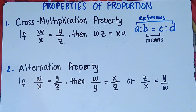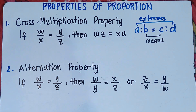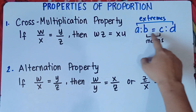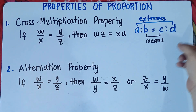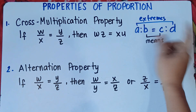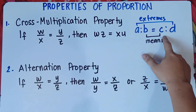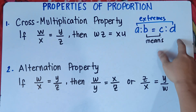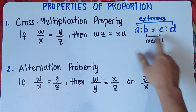In proportion, we have what we call the means and the extremes. The product of the means — when you multiply B and C — should be equal to the product of the extremes, when you multiply A and D. So B times C is equal to A times D. A and D are the extremes; B and C are the means.